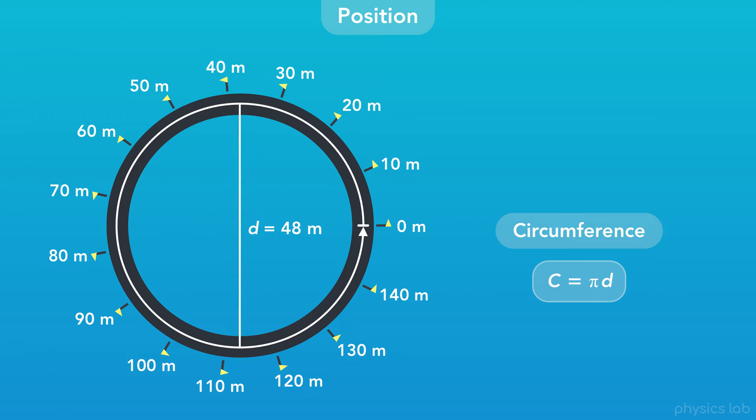If the diameter, d, is 48 meters, then the circumference is 150.8 meters. That's the total length of the path around the circular road.